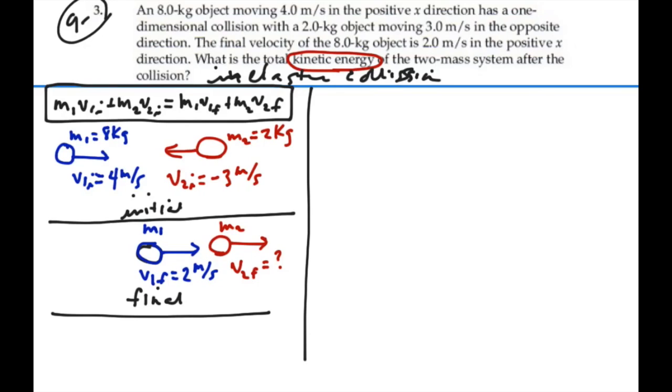Okay, so continuing with our conservation of momentum equation, we have mass 1, which is 8 kilograms, moving at 4 meters per second initially, plus mass 2, which is 2 kilograms, moving initially with negative 3 meters per second. That should be equal to mass 1, 8 kilograms, moving with a final velocity of positive 2.